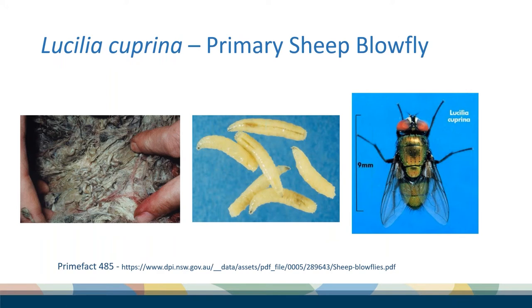I'll just go through some of the basic stuff to start with. I don't need to show anybody a picture of flystrike — on the left these are pretty much fully grown maggots. This dark bit here is their crop, which is full, so they've been actively feeding. And this picture here is of a male fly.